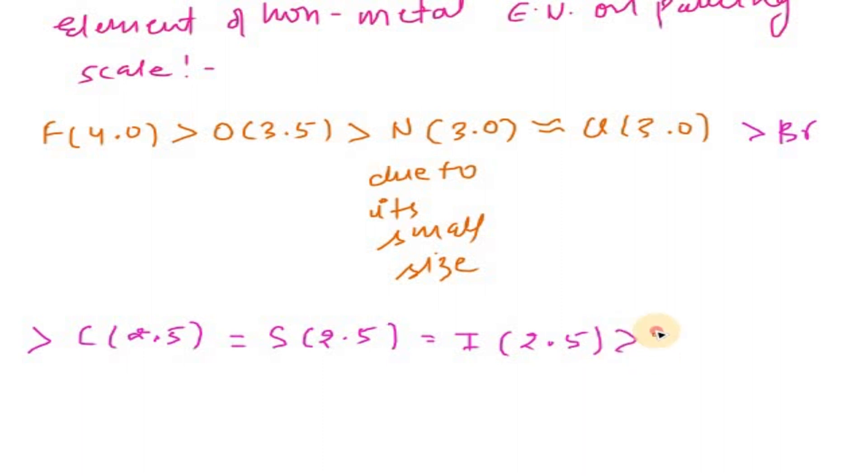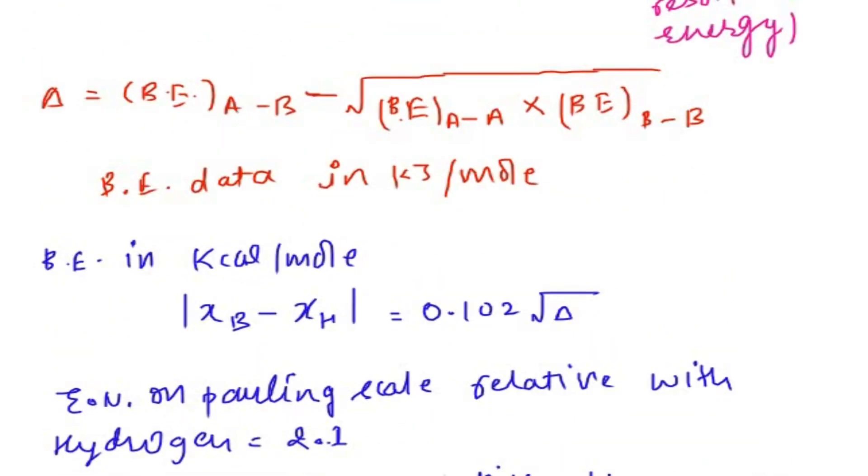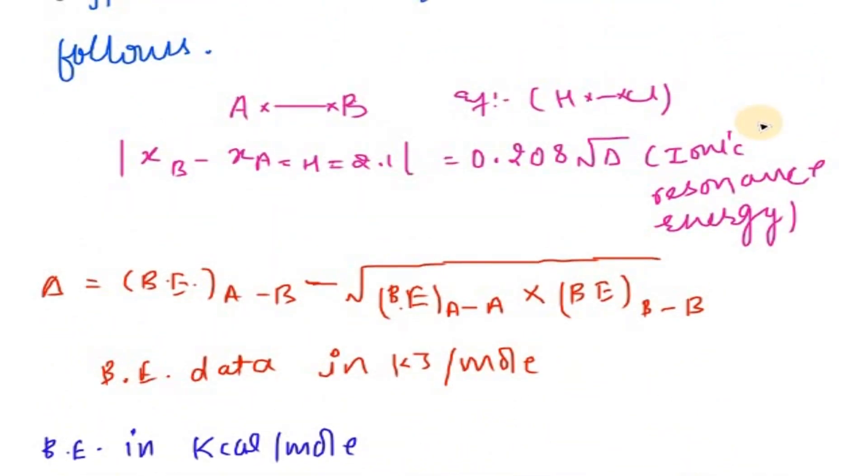Now after phosphorus, the last we consider is hydrogen, which is 2.1. So this is the whole order from fluorine to hydrogen. So we may arrange the rest of the elements, the non-metals from the periodic table, into this order. This is the overview of the Pauling scale.